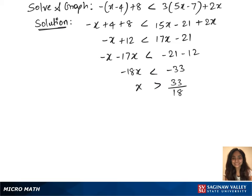And put this in interval notation. So that's 33 over 18, comma infinity. And here 33 over 18, this fraction is approximately 1.833.